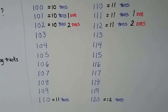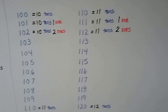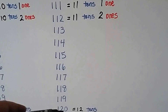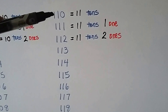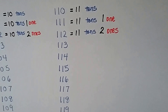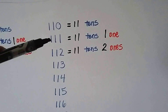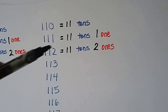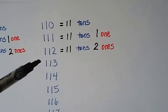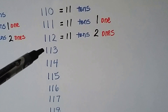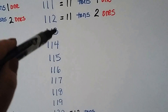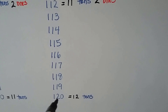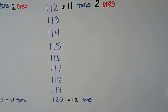So for this video, we learned 110 to 120. We know that 110 is 11 tens. We know that 111 is 11 tens and 1 more. 112 is 11 tens and 2 more, 2 ones. And it continues down with the ones place getting bigger by one number, until we get to 120, and that's equal to 12 tens.